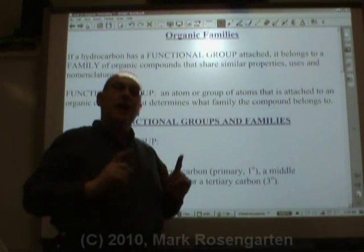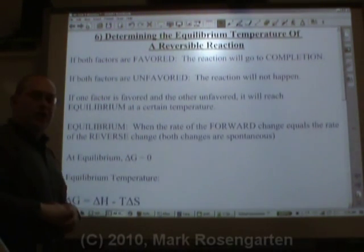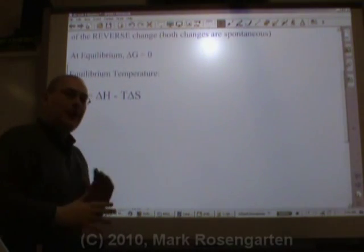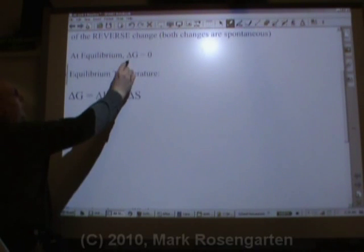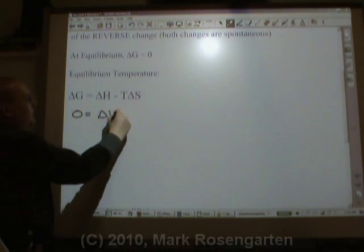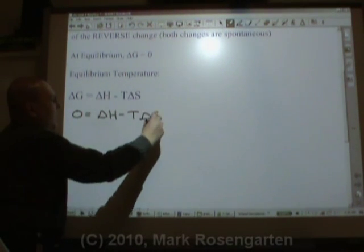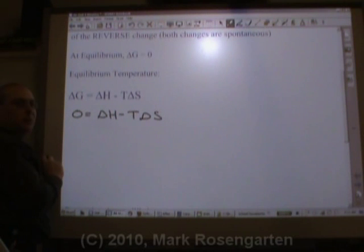When delta G equals zero, we have equilibrium. So at equilibrium, delta G equals zero. To find out what temperature reaches equilibrium, if delta G equals zero, we can make this zero equals delta H minus T delta S, because at equilibrium, delta G will be zero.